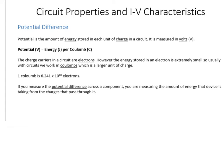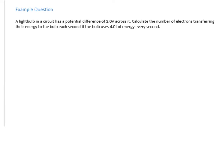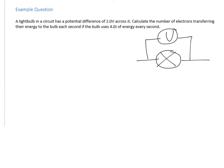Here's an example: we've got a light bulb in a circuit with a potential difference of two volts across it, measured by a voltmeter. We want to know the number of electrons transferring their energy to the bulb each second, given that the bulb uses four joules of energy per second.